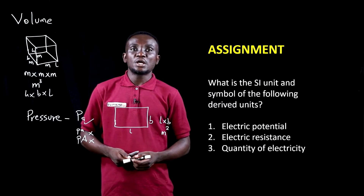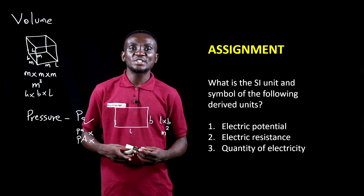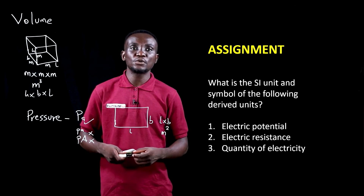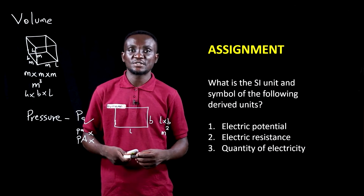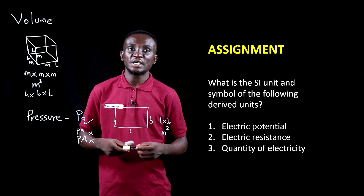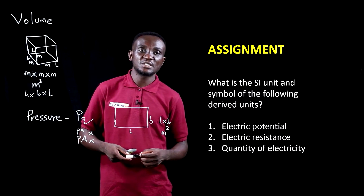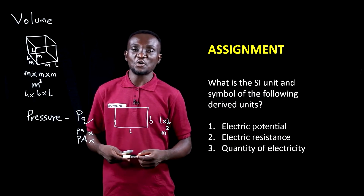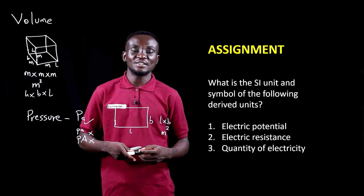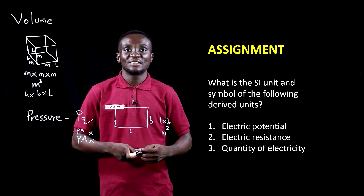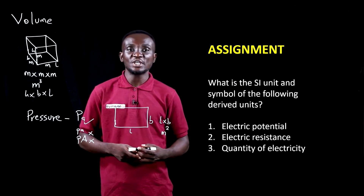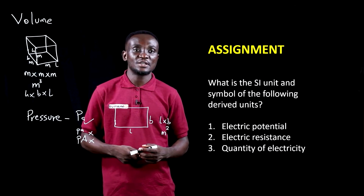Assignment: What is the SI unit and symbol of the following derived quantities? Electric potential, electric resistance, and quantity of electricity. Discuss that, and we'll take it up as we move along in the lessons.